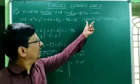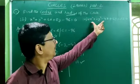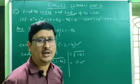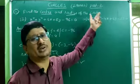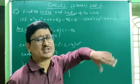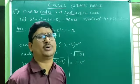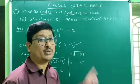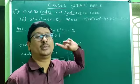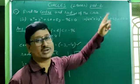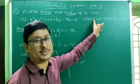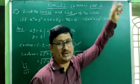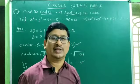In the same way, you try this problem: 2x² + 2y² − 4x + 6y − 3 = 0. We have to convert it into the general form. Divide the equation by 2, which gives x² + y² − 2x + 3y − 3/2 = 0. Then find the center and radius yourself.